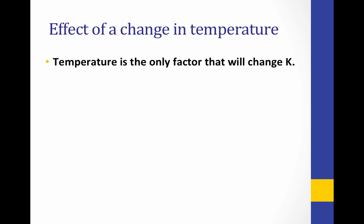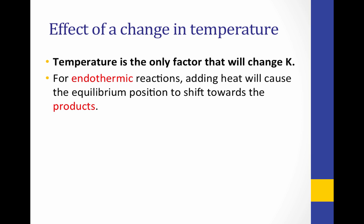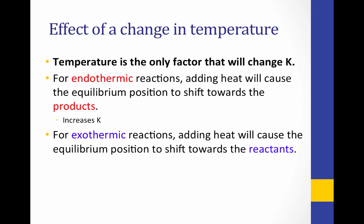Now let's look at the effect of temperature on equilibrium position. Temperature changes are the only factor that will actually change the value of K, the equilibrium constant. Changing the concentrations will not change the value of K, because the new ratio of concentrations will match the old ratio. However, temperature changes will not create the same ratio of reactants to products as we originally had. For an endothermic reaction, adding heat will cause the equilibrium position to shift towards the products, increasing K. For an exothermic reaction, adding heat will cause the equilibrium position to shift towards the reactants, thereby decreasing K.